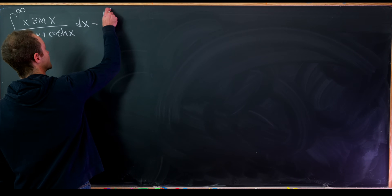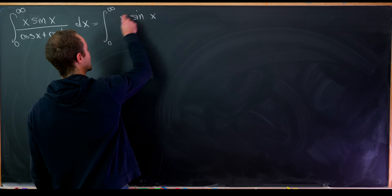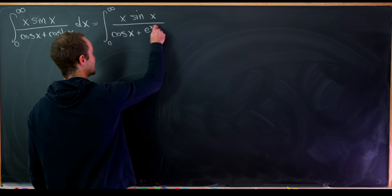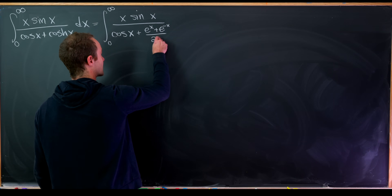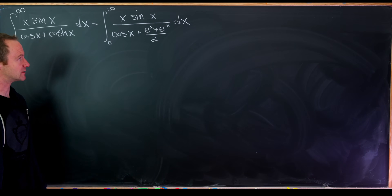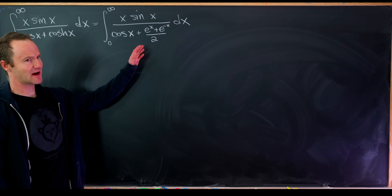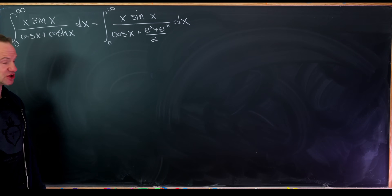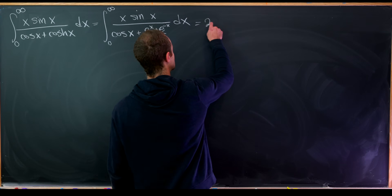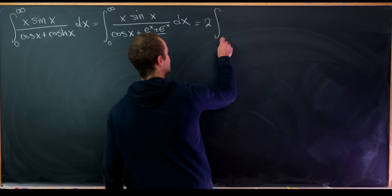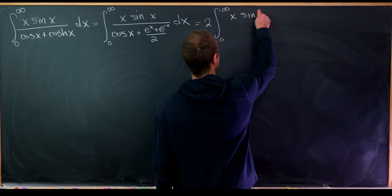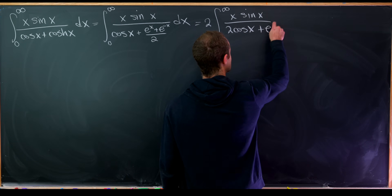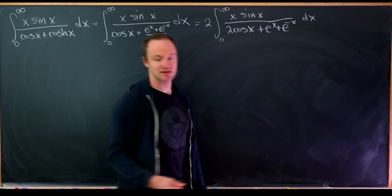I'm going to take this and write it as the integral from zero to infinity. We'll have x times sine of x and then in the denominator I'll keep that cosine of x as is but write my hyperbolic cosine as e to the x plus e to the minus x over two — that's just the definition of the hyperbolic cosine. Now I'd rather not have a fraction in the denominator so I'll multiply the numerator and the denominator by two. That gives a two in the numerator, and in the denominator I have two times cosine of x plus e to the x plus e to the minus x, then dx.